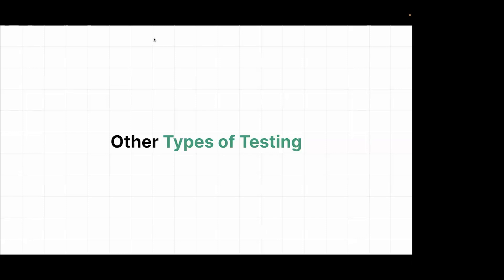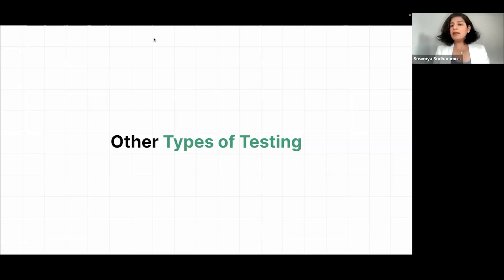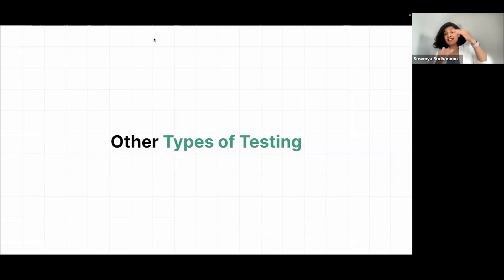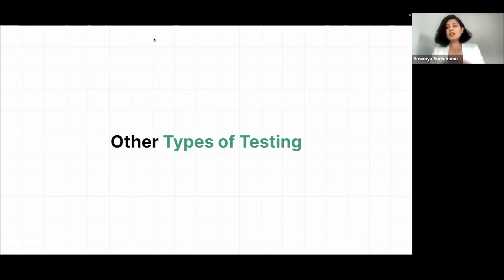How do we ensure data is encrypted and confidential information isn't shared? At the API level, everything starts with authentication and authorization. Authorization is like verifying you're the right person — when somebody comes to your home, if it's your family, you recognize them and open the door. Likewise in APIs, you'll be given bearer tokens, basic authentication with a username and password, or JWT tokens to authenticate and authorize yourself. This ensures no random person can simply walk in and change data on your servers.